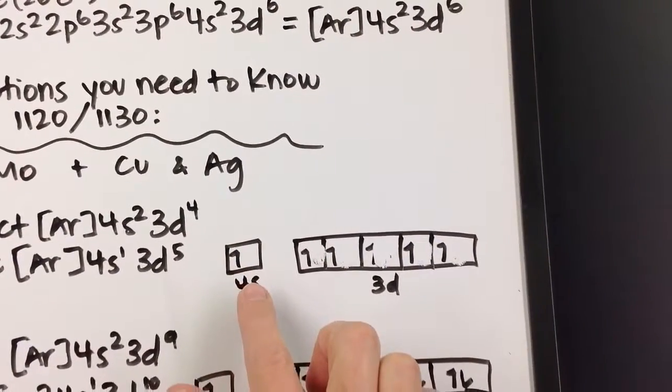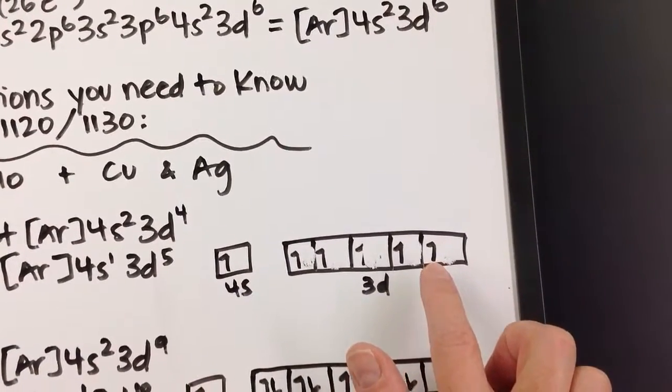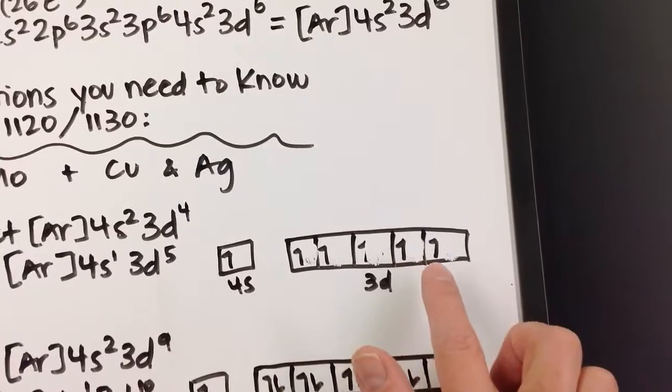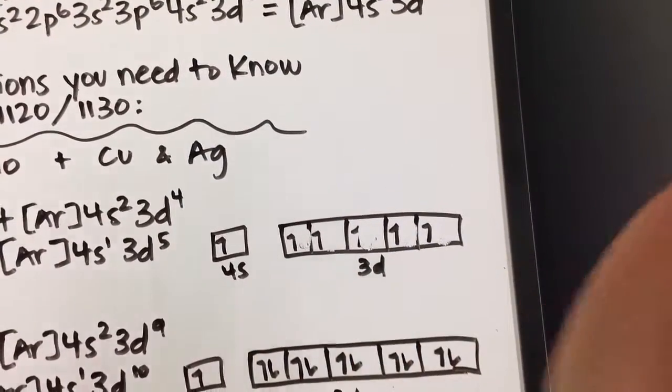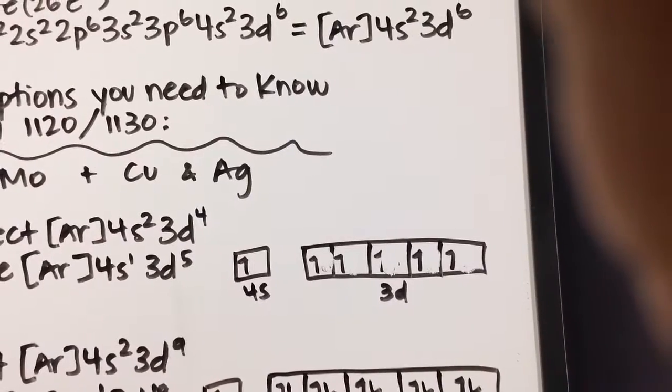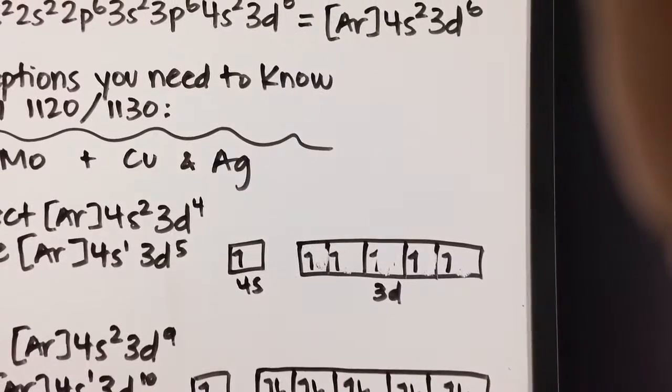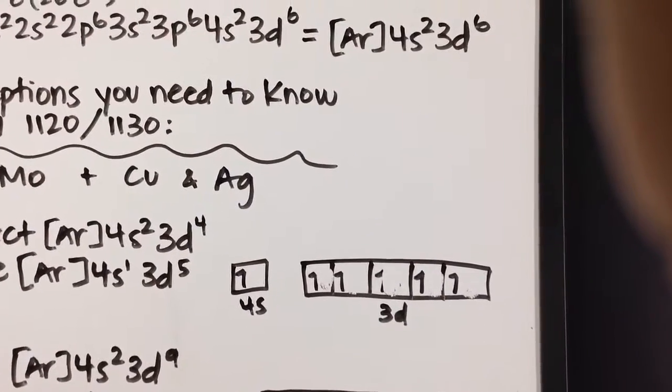So what happens is one of these electrons from 4S gets stolen and dumped over here in 3D. So now that the D-block, the 3D, is half filled completely, and that's more stable from a quantum mechanical perspective. And that's really all that you need to worry about for CHEM 1120 and CHEM 1130. You can get into the specifics of the quantum mechanics when you take future chemistry classes.